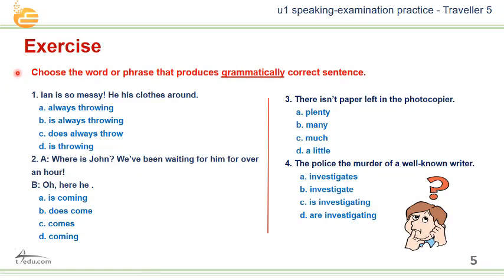Exercise. Choose the word or phrase that produces a grammatically correct sentence. Question one: He is always throwing his clothes around — always throwing, is always throwing, does always throw, he is throwing.